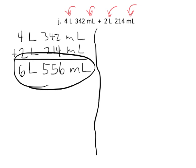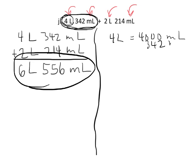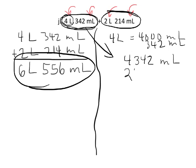Now there's another way to do it, and that's where you take this number and you convert it purely into milliliters. So 4 liters, 4 liters is 4,000 milliliters, plus the original 342 milliliters makes this entire thing 4,342 milliliters. In the same fashion, this becomes 2,214 milliliters, and now we can add.